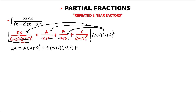Distributing to the last term, we cancel (x+3) squared, and the remaining is C times (x+2). So from this equation we need to find the values for A, B, and C. To solve for A,